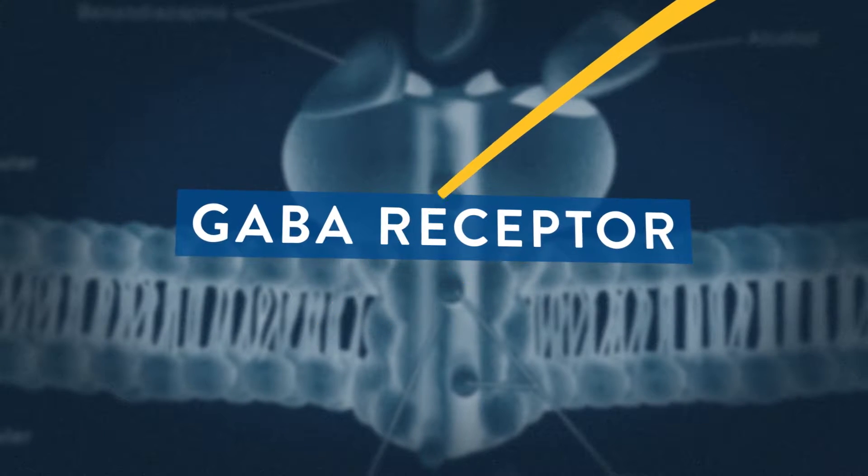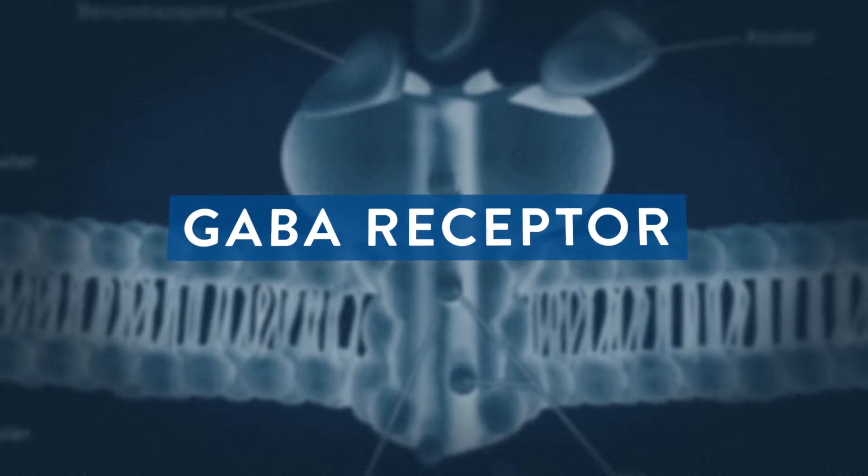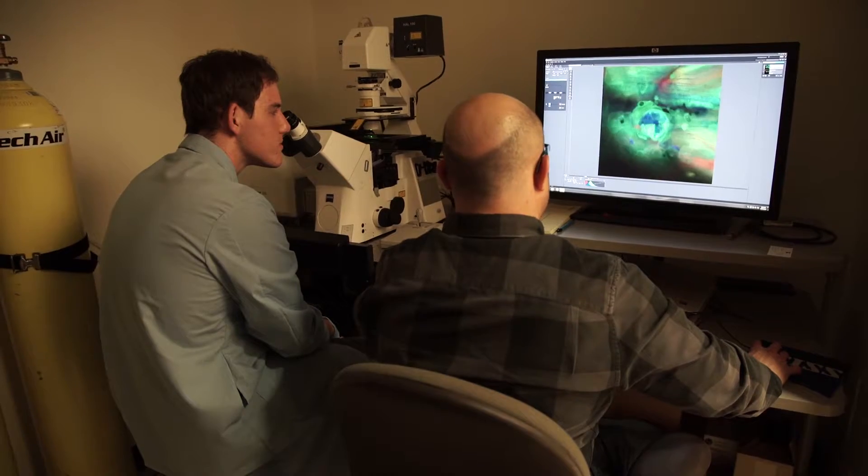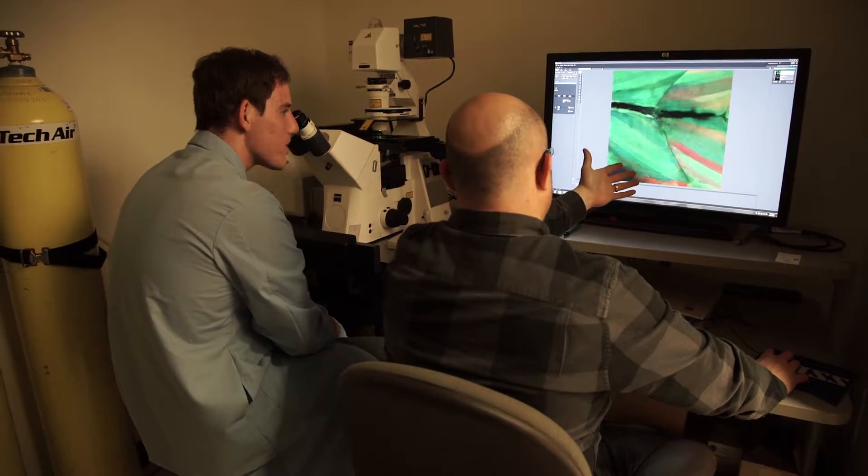The GABA receptor is a special chloride channel that exists within your brain. It allows for the release of negatively charged chloride ions, which causes neuroinhibition.